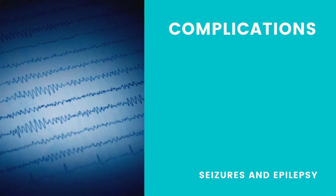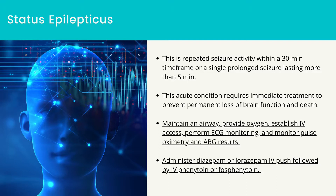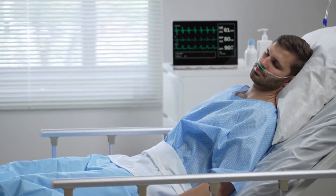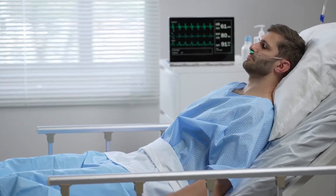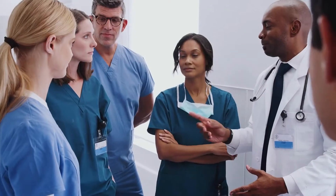Complications — status epilepticus: this is repeated seizure activity within a 30-minute time frame or a single prolonged seizure lasting more than 5 minutes. Complications are related to decreased oxygen levels, the inability of the brain to return to normal functioning, and continued assault on neuronal tissue. This acute condition requires immediate treatment to prevent permanent loss of brain function and death. Usual causes include substance withdrawal, sudden withdrawal from AEDs, head injury, cerebral edema, infection, and metabolic disturbances. Nursing actions: maintain an airway, provide oxygen, establish IV access, perform ECG monitoring, and monitor pulse oximetry and ABG results. Administer diazepam or lorazepam IV push followed by IV phenytoin or fosphenytoin.